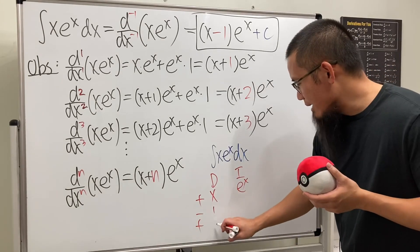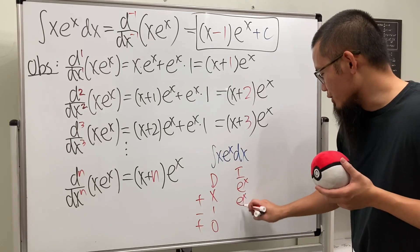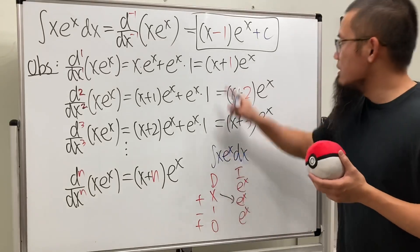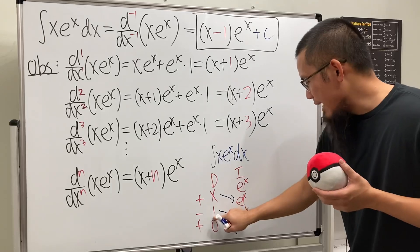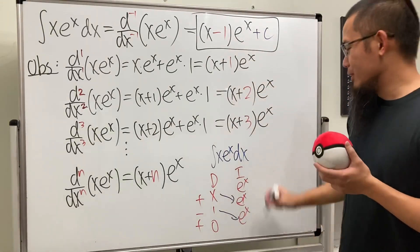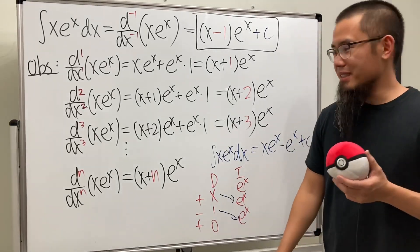So, x, differentiating one time, we get 1, do it one more time, we get 0, and then e^x. It's just always e^x when you integrate. And ladies and gentlemen, this times this is x times e^x, and then minus e^x. And after that, we'll put down plus c. So, of course, this right here. Yeah, what do you guys think?